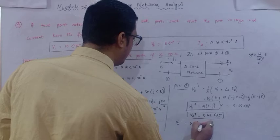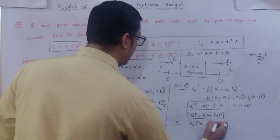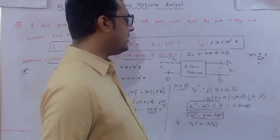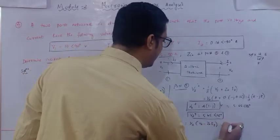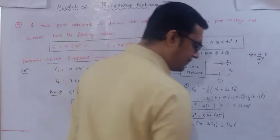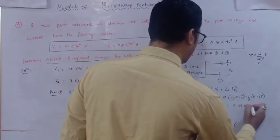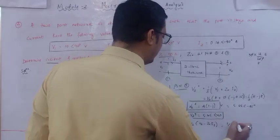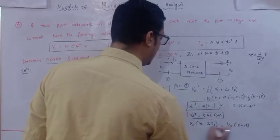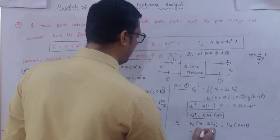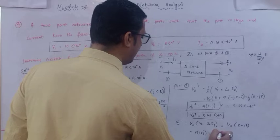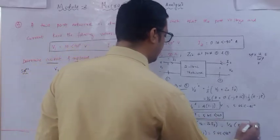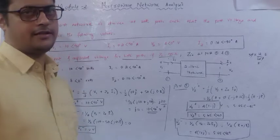For the reflected potential at port 2: V2− = (1/2)(V2 − Z0·I2) = (1/2)(8 − (−j8)) = (1/2)(8 + j8) = 4(1 + j). In polar form this is 5.65∠+45°. So the incident potential at port 2 is 5.65∠−45° V and the reflected potential is 5.65∠+45° V.